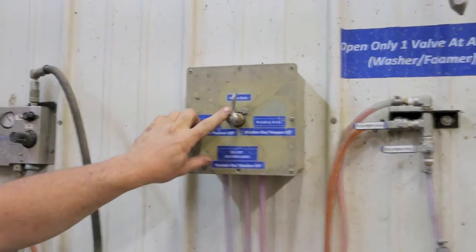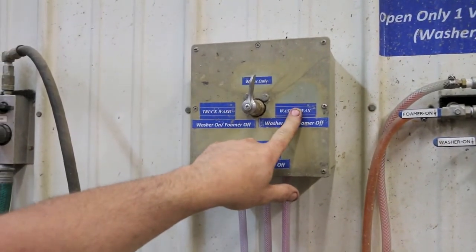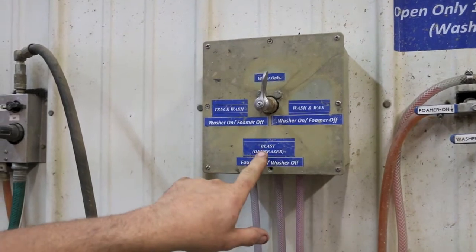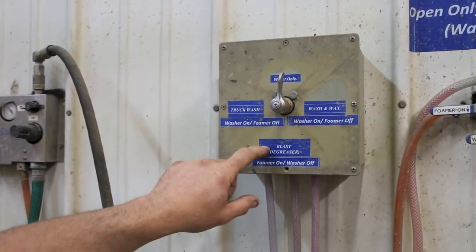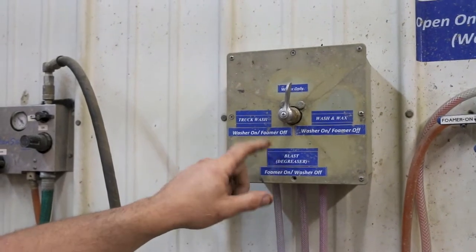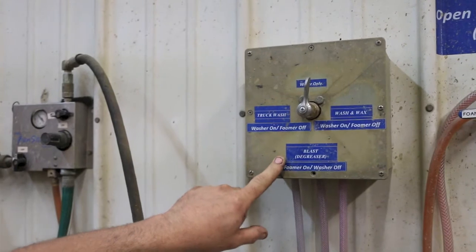This is the selector valve for wash and wax, which if you're doing like a pickup to clean, we got blast degreaser right here, which would be for heavy duty grease. If you're cleaning a machine, but you wouldn't want to use that on a pickup or something because it will strip the wax.